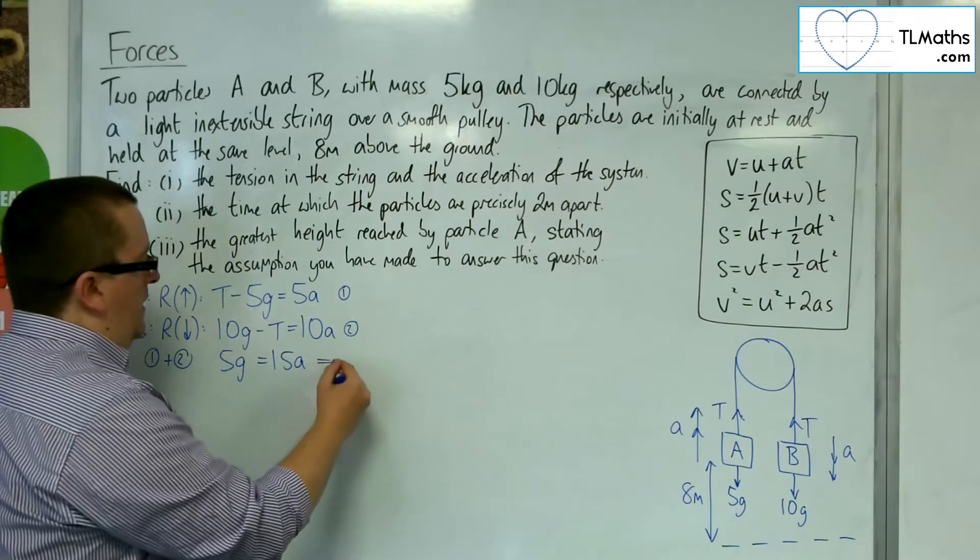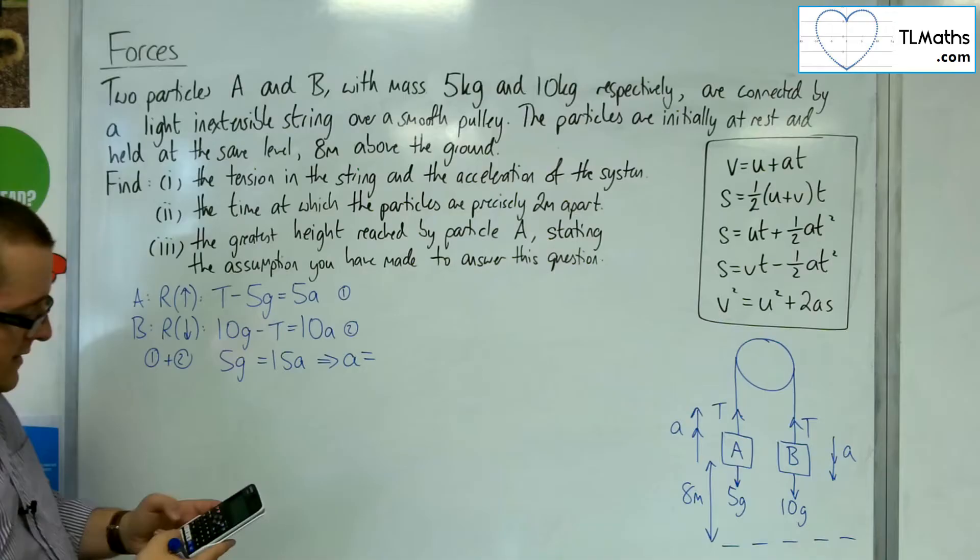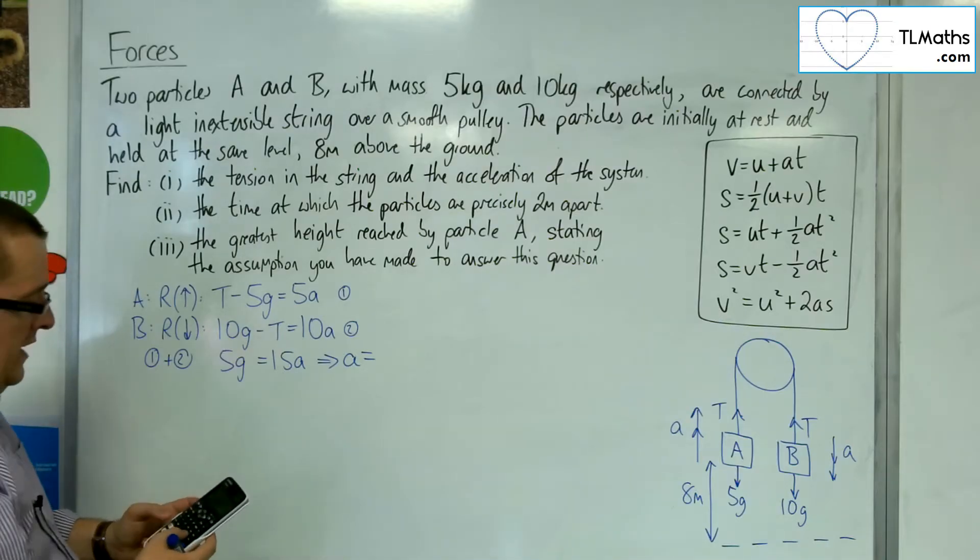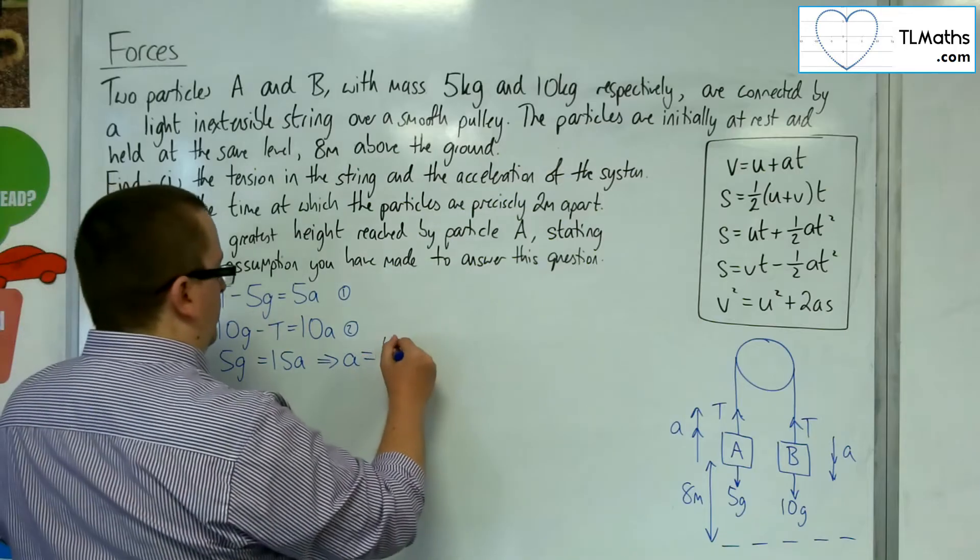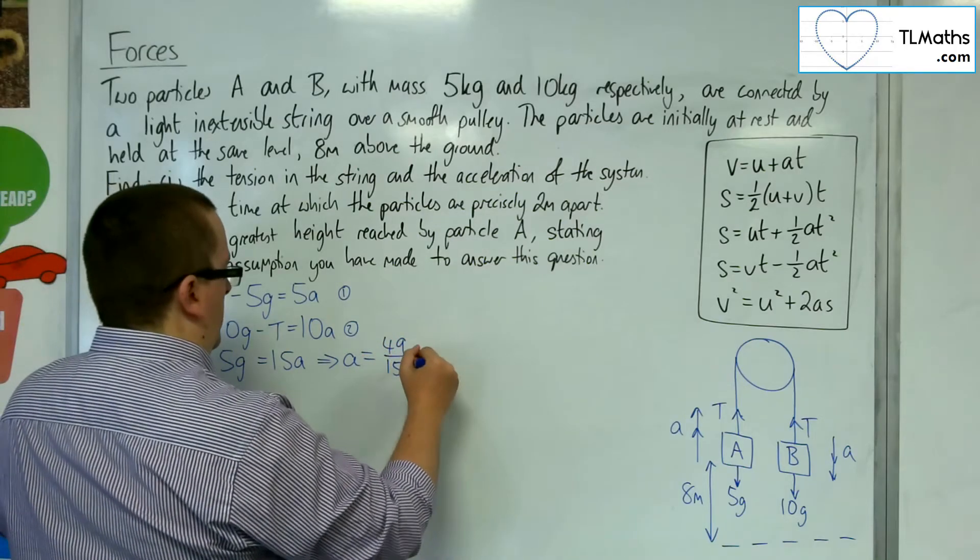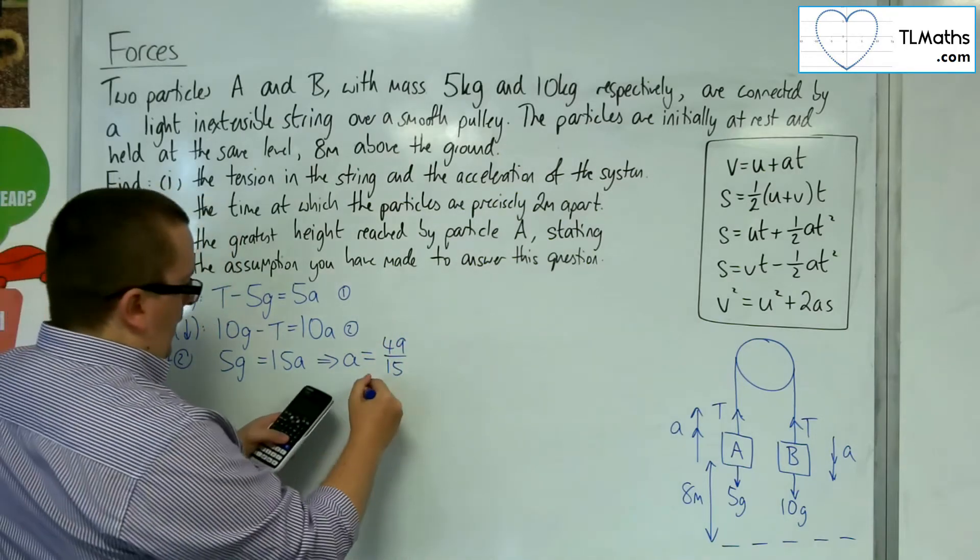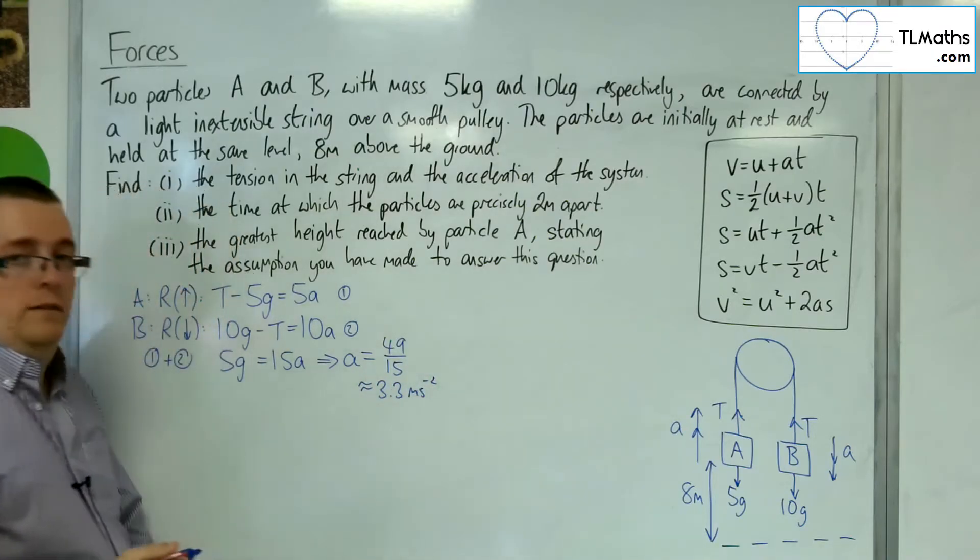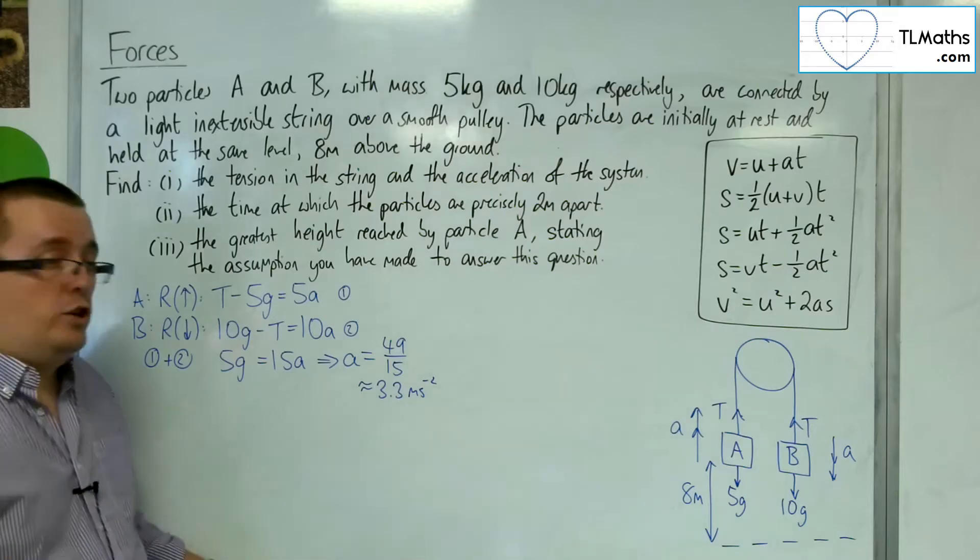Okay, so that means that A, if I take g as 9.8, 5 lots of 9.8 divided by 15 gets me 49 fifteenths. Which is approximately 3.3 meters per second per second. Okay, so that's the acceleration of the system.